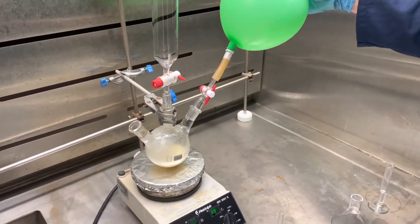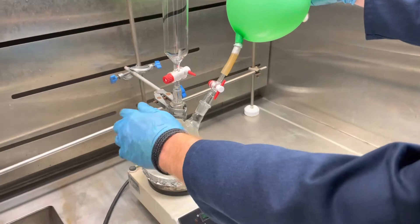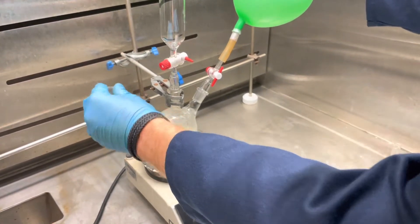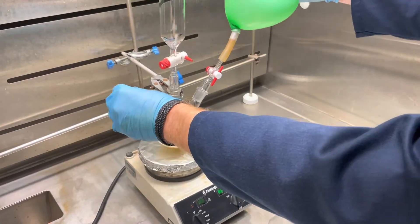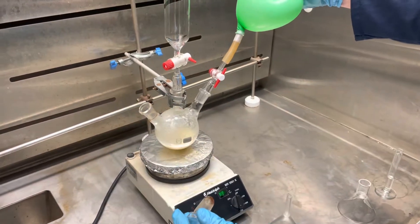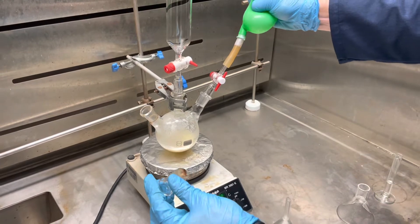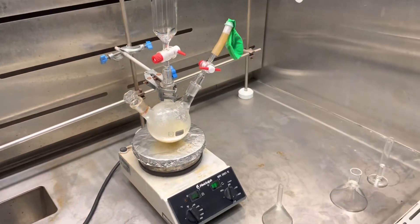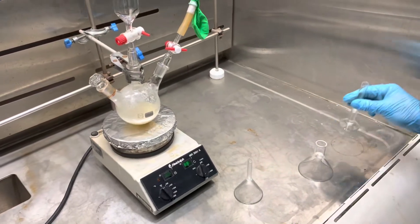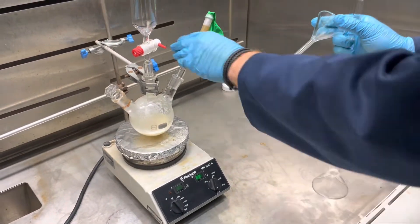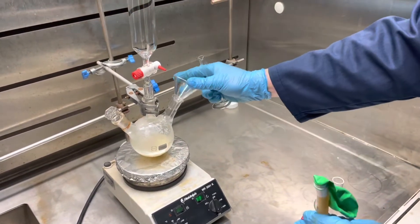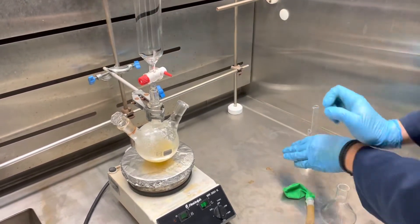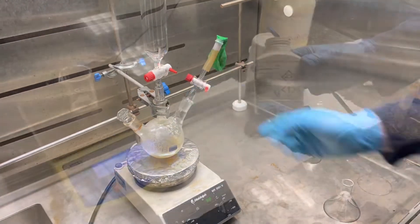Before adding this monomer into the reagent flask, we will first again purge our system with nitrogen. Once the system is purged, you can add your cyclopentadiene into the system and again stopper it.